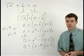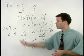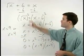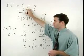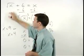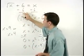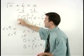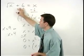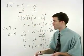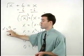And as your last step, make sure to check both answers back in the original equation. If we plug a 9 in for x, we have the square root of 9 or 3 plus 6 equals 9. And since 3 plus 6 equals 9 is a true statement, our first answer works.